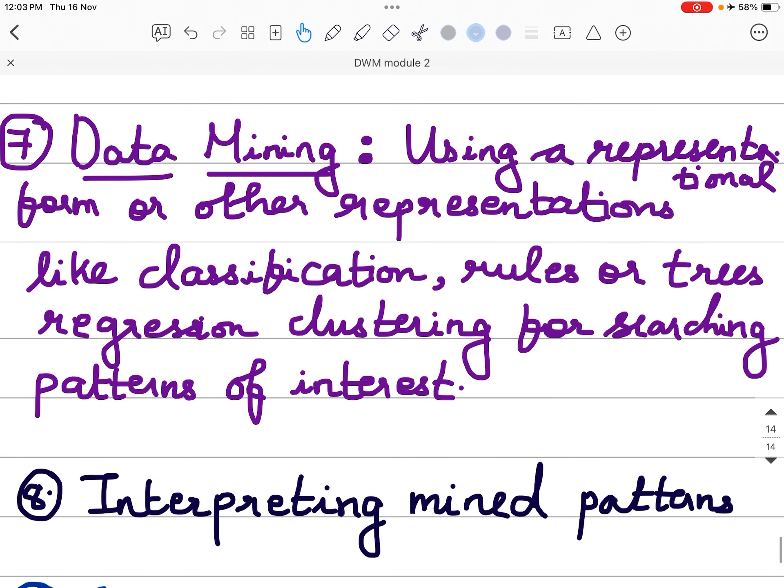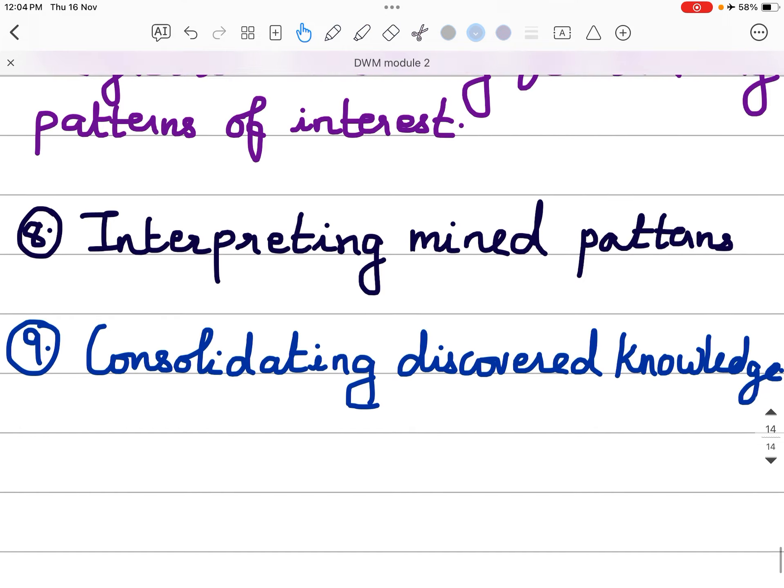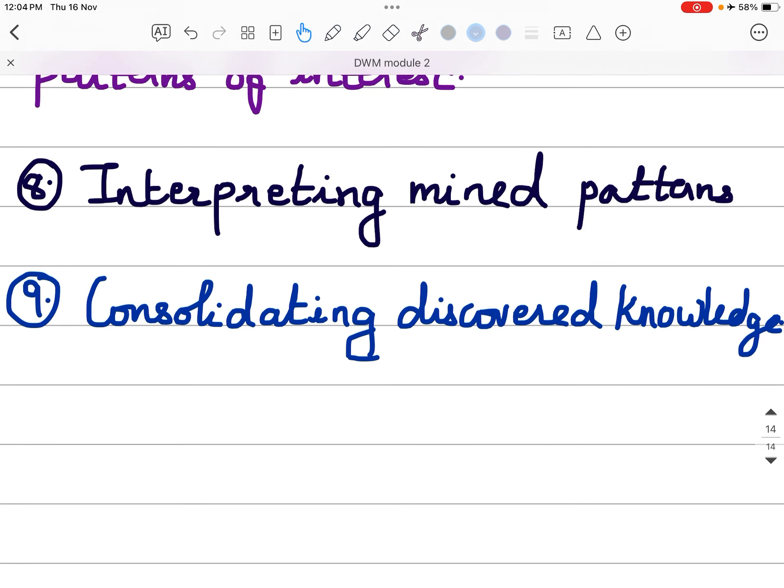Seventh is the actual data mining now will occur. Using a representational form or other representations like classification, rules or tree regression clustering for searching the patterns of interest. Interpreting the mined patterns and next is consolidated discovery.